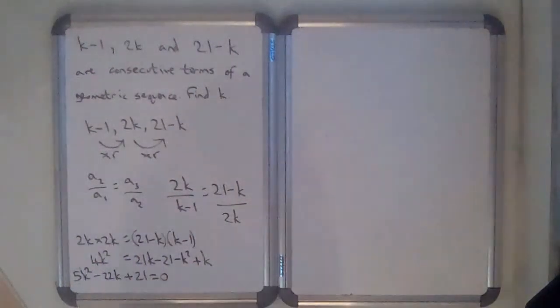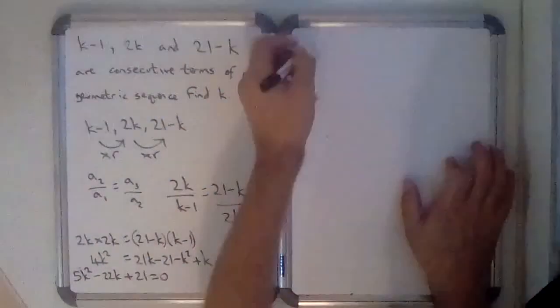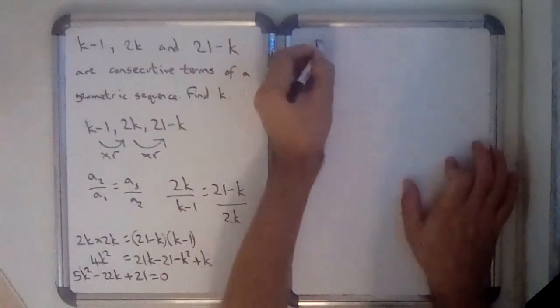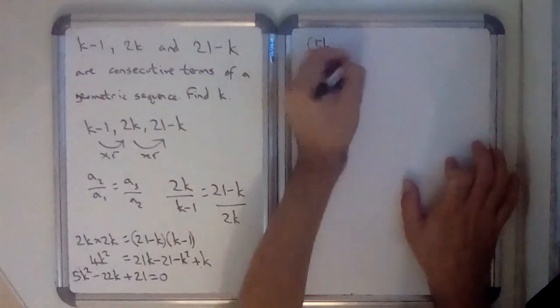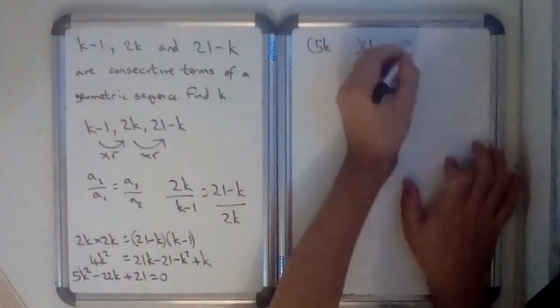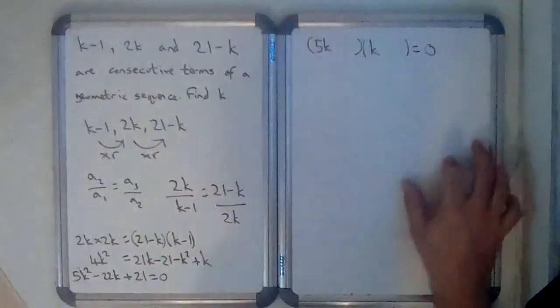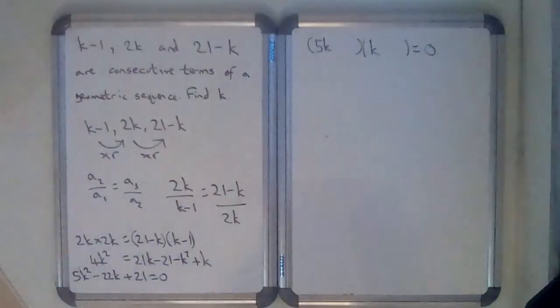I'm hoping to factorize that. So hopefully 5k, k equals 0. So the factors of 21, it's not got many factors. It's basically got 3 and 7...